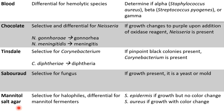Lastly, we have the mannitol salt agar plate. It is selective for halophiles — organisms that tolerate a high level of salt — and differential for organisms that can ferment mannitol. The two main Staphylococcus species we're interested in are Staphylococcus epidermidis and Staphylococcus aureus. Both will grow on the mannitol salt agar plate because they are both tolerant of high salt levels. However, only Staphylococcus aureus can ferment mannitol, producing acid and dropping the pH, causing a color change. Staphylococcus epidermidis is expected to grow but show no color change.